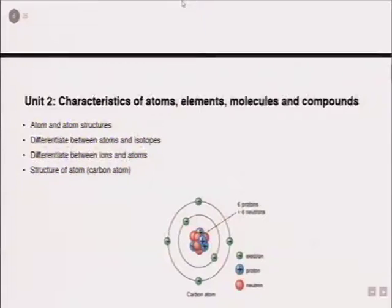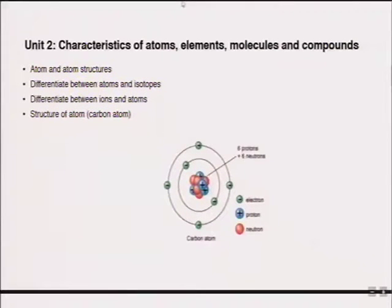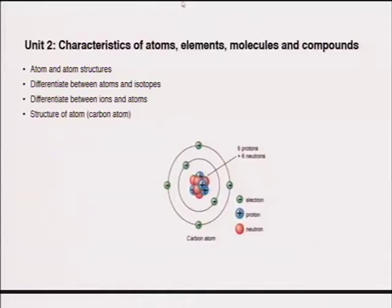Unit 2 is one of the most important units — it deals with atoms, elements, molecules and compounds. For you to understand the reactions of different elements, you need to understand an atom and its structure. Every atom has three components: protons, neutrons and electrons. The protons and neutrons are found in the center (nucleus) and the electrons are found in the shells of the elements.